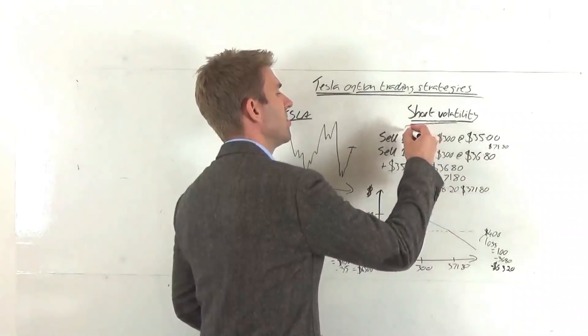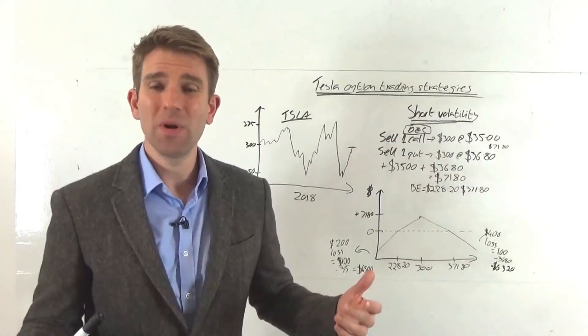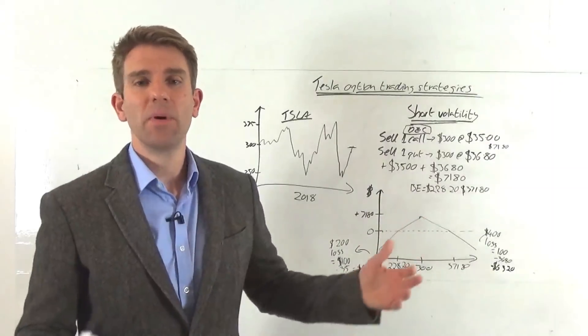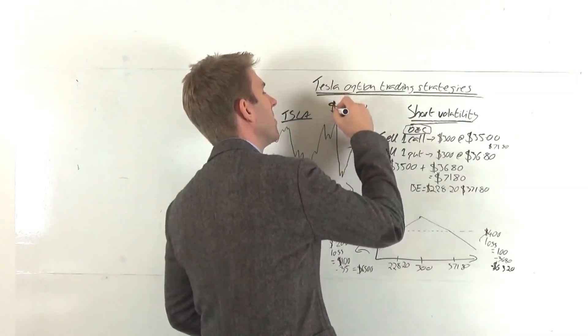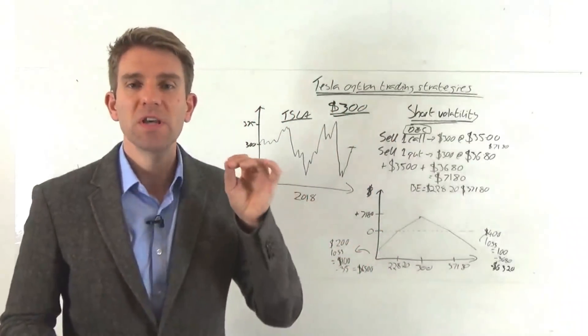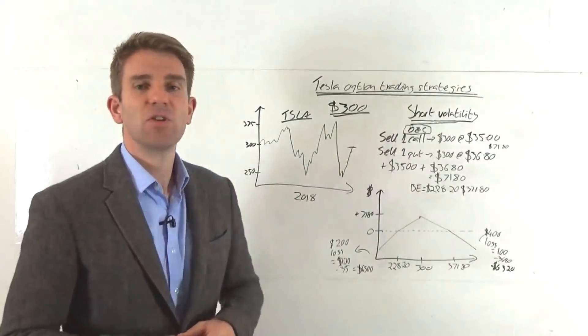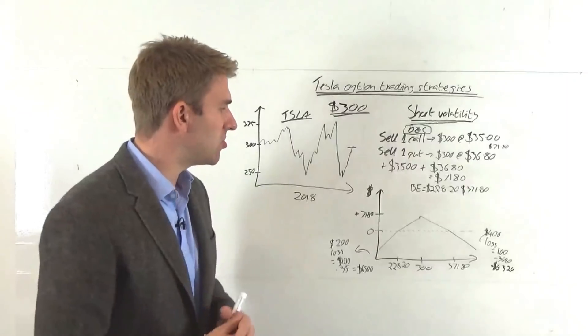So you have a thesis. You go, I'm going to work off a December thesis that we're not going to do anything. We might go up a bit, down a bit, but we're going to be in exactly the same position. The current price at the moment of Tesla is $300. Your thesis is it's not going to go anywhere, it's going to close December 21st at $300. I want to profit from that. So how would you do it?